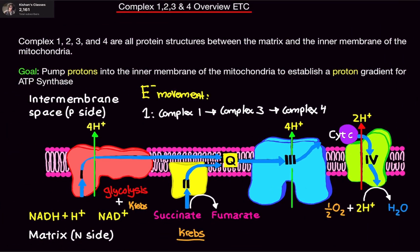Or, the other option is the electrons can go from Complex 2 to Complex 3 to Complex 4. It does not go from 1 to 2 to 3 to 4. The electrons don't.